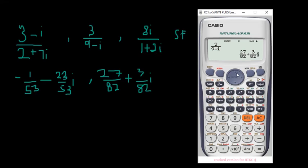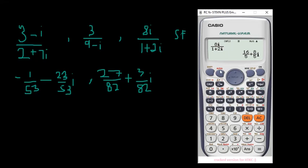Now let's try the last one: 8i / (1 + 2i). Enter 8i divided by (1 + 2i) and calculate — there we have it.